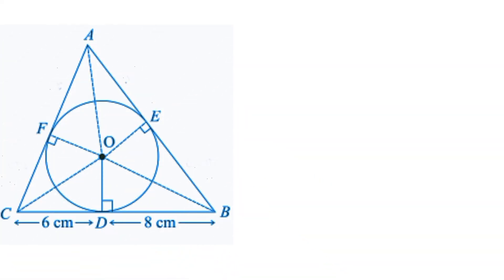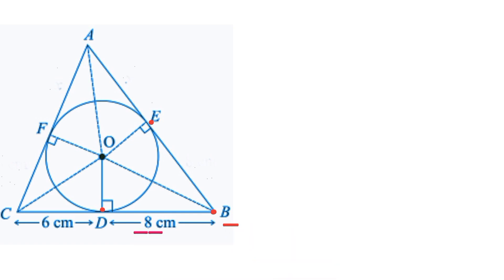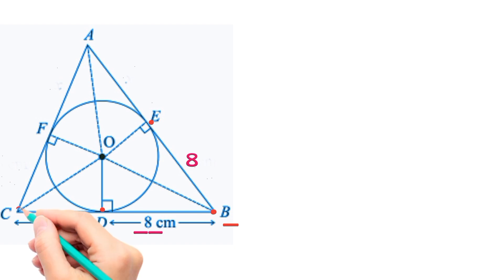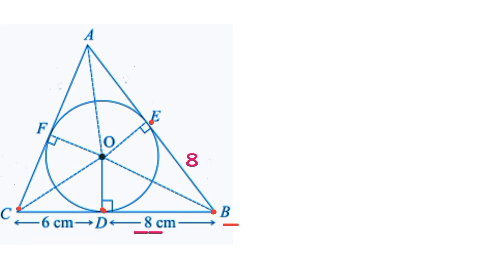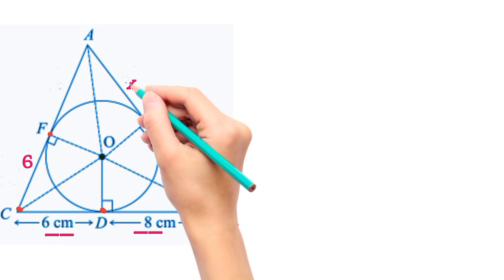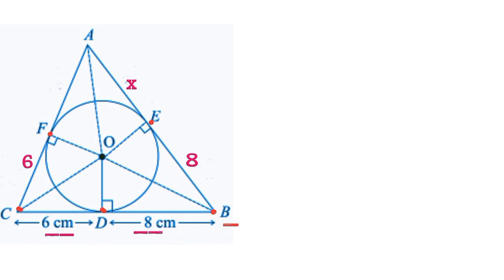Looking at the figure, EB and DB are tangents to the circle from the same point B, so if DB = 8 centimeters, then EB = 8 centimeters. Similarly, CD and CF are tangents from point C, so CF = 6 centimeters. If we assume AE = x, then AF = x centimeters as well.